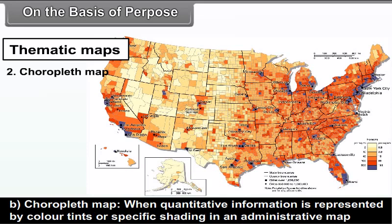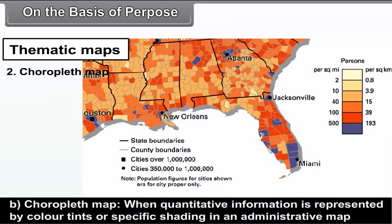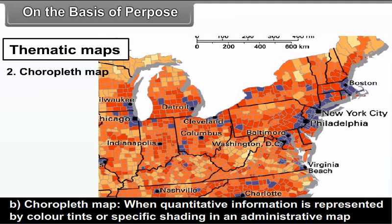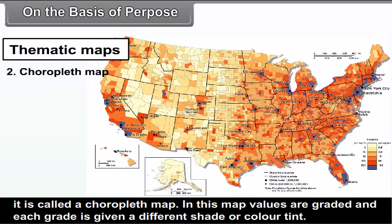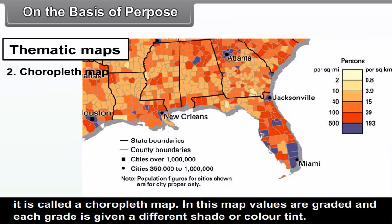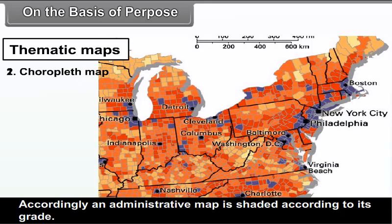Choropleth Map: When quantitative information is represented by colour tints or specific shading in an administrative map, it is called a choropleth map. In this map, values are graded and each grade is given a different shade or colour tint. Accordingly, an administrative map is shaded according to its grade.